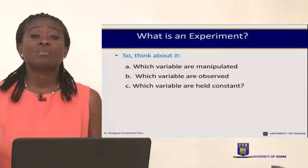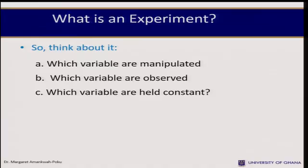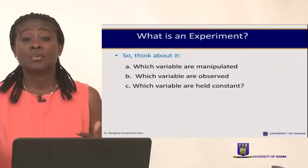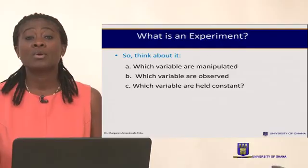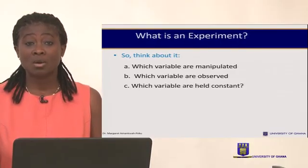The question is: what variables do we manipulate, what variables do we observe, and what variables do we hold constant? As psychologists or researchers, we manipulate the independent variable, we observe the dependent variable, and we control or hold the extraneous variables constant.